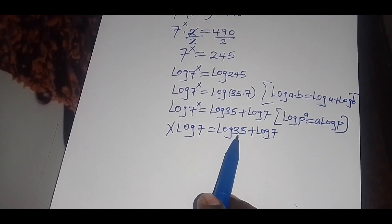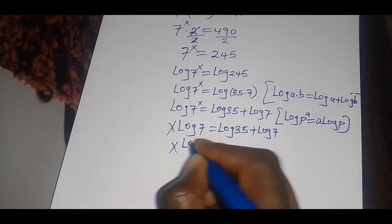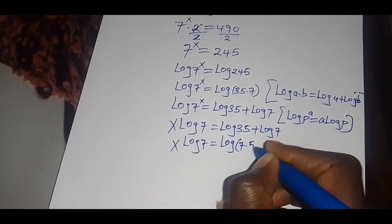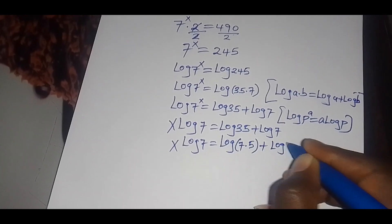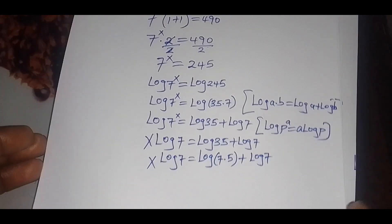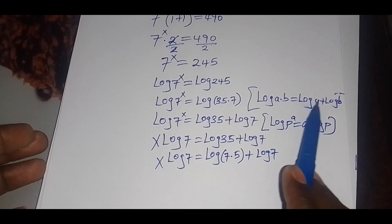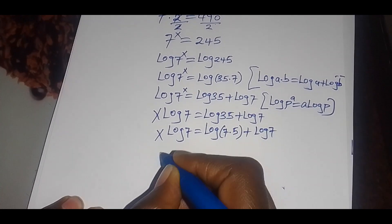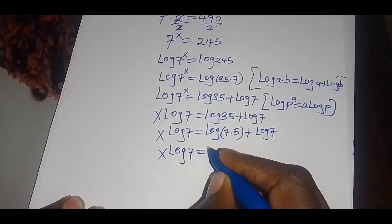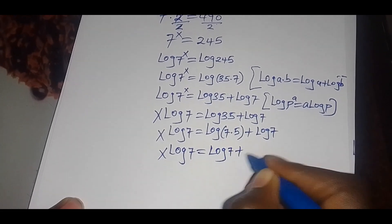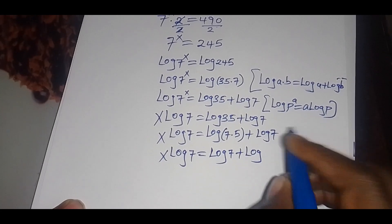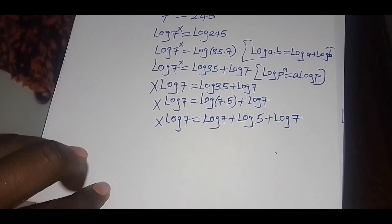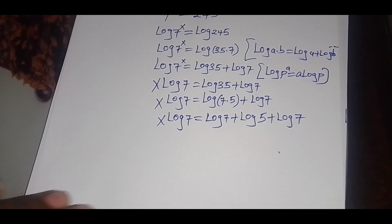Now remember, 35 can be written as 7 multiplied by 5, so log(35) becomes log(7×5) plus log(7). Applying the identity that log(a×b) equals log(a) plus log(b), we are going to have x·log(7) equals log(7) plus log(5) plus log(7).